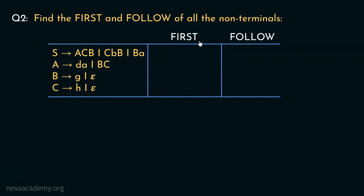Let's begin with the Firsts. As usual, we start with the last non-terminal. The production rule is: C can be rewritten as either lowercase h or epsilon. Therefore, in First of C, we will have the symbols lowercase h and epsilon.